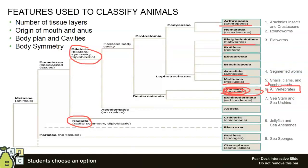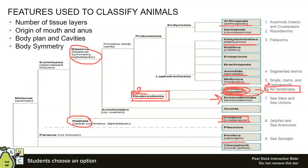Chordata is all vertebrates — it's a pretty big one. We're going to talk about echinodermata, which interestingly are closely related to chordates. They are both deuterostomes — remember, that means the anus forms first in the gastrula. We're also going to talk about jellyfish — cnidaria is the jellyfish and sea anemone family. And my favorite: porifera, sea sponges.